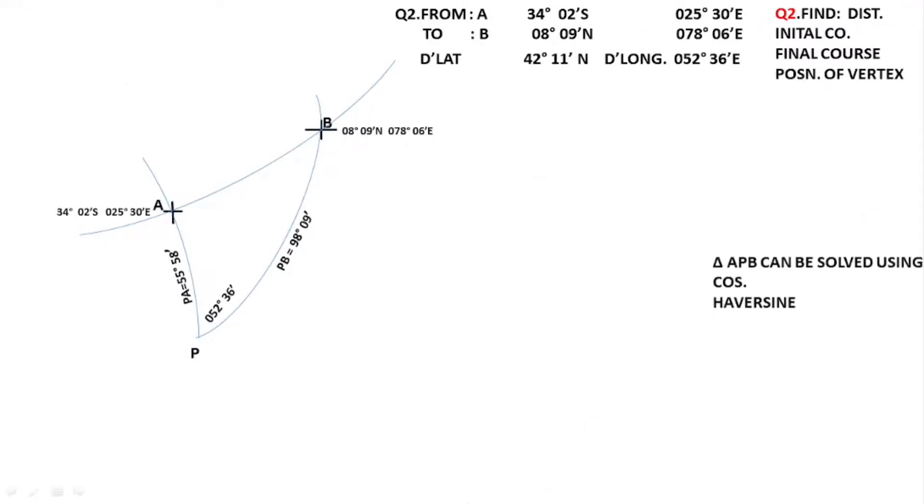Now I have the triangle ready for solving. I can solve it with sine-cosine or with ABC tables, which I will discuss later. I am using the cosine formula here. The cosine formula is simple: you take the cosine of the angle, then take the side which is opposite — that is AB — then write down the two remaining sides, and the sine of the included angle. It is a very simple formula, and from it you get your distance AB.